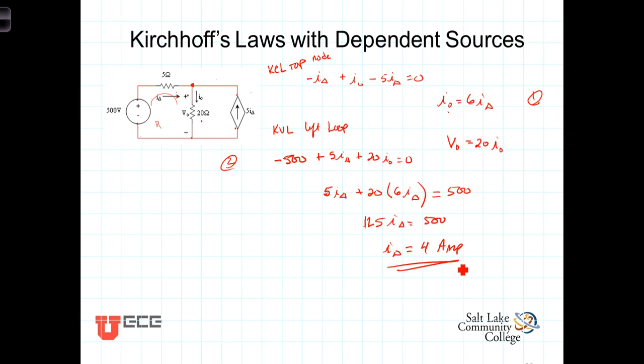That's not what we were asked to find. We were asked to find the voltage across the 20-ohm resistor, but knowing I-delta helps us. Because we know that V-naught equals 20 times I-naught, and we know that I-naught is 6 times I-delta, so I-naught equals 6 times I-delta, which equals 6 times 4 equals 24 amps. And we know that V-out equals 20 times I-naught, so finally V-naught equals 20 times I-naught, which equals 20 times 24, which equals 480 volts.